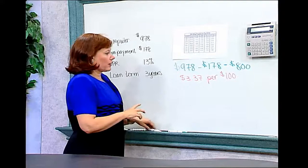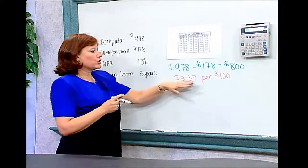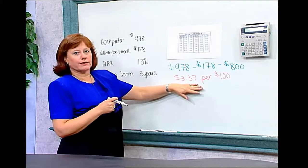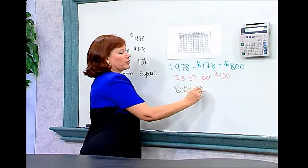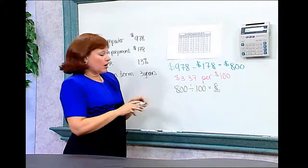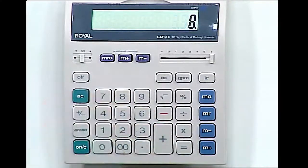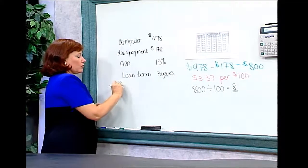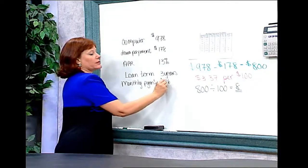The next thing we need to do is figure out exactly how much her payment will be. We know she borrowed $800, so we take $800 divided by 100, which gives us eight units of $3.37. We multiply $3.37 by eight, and we find out that her monthly payment is $26.96. Her monthly payment is $26.96, and she will pay that for each month of her loan.